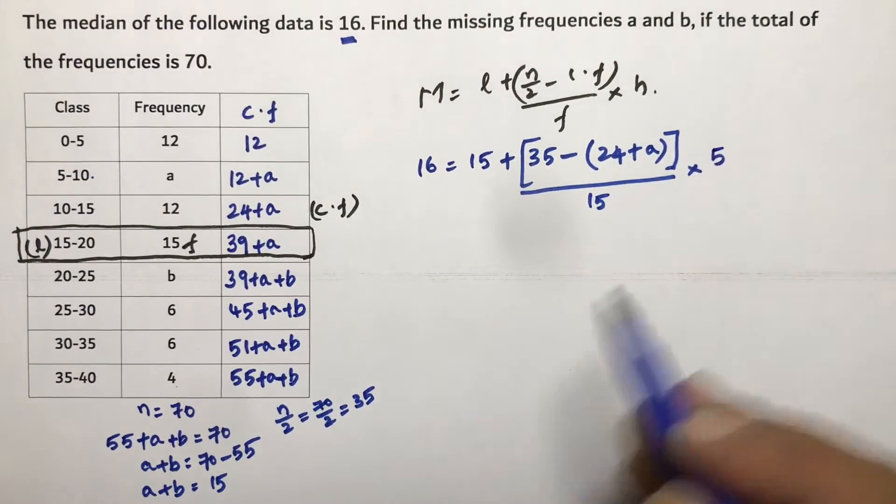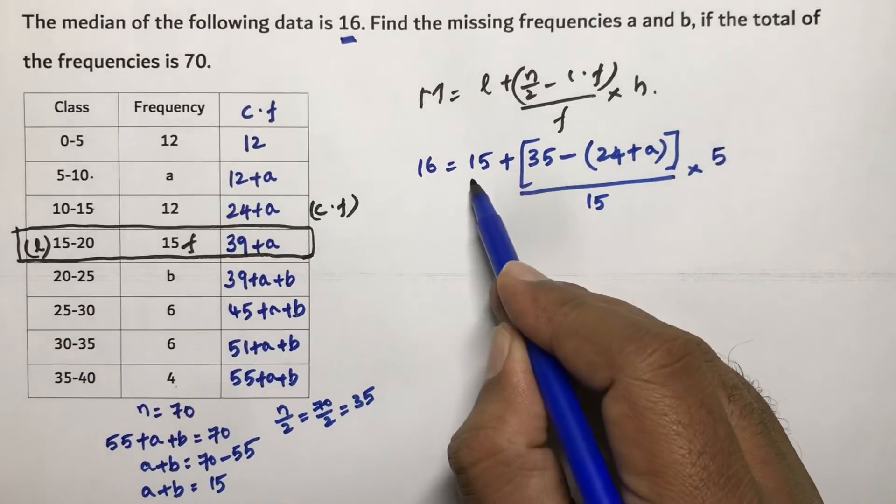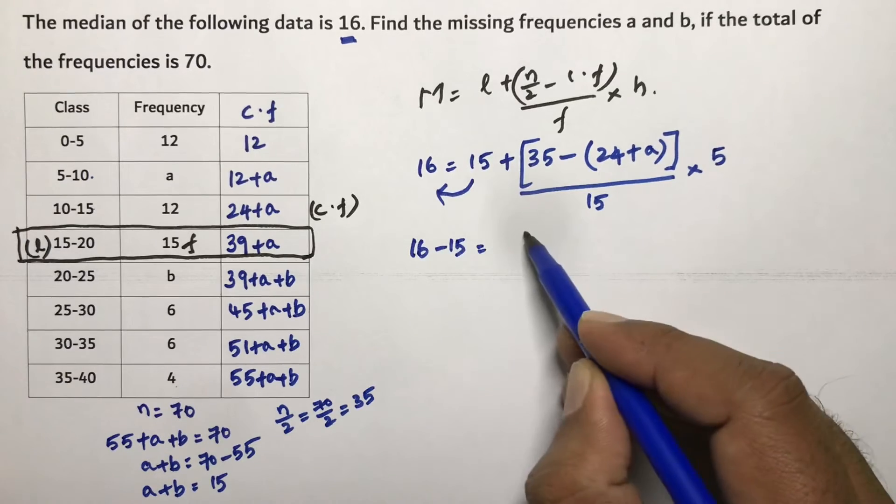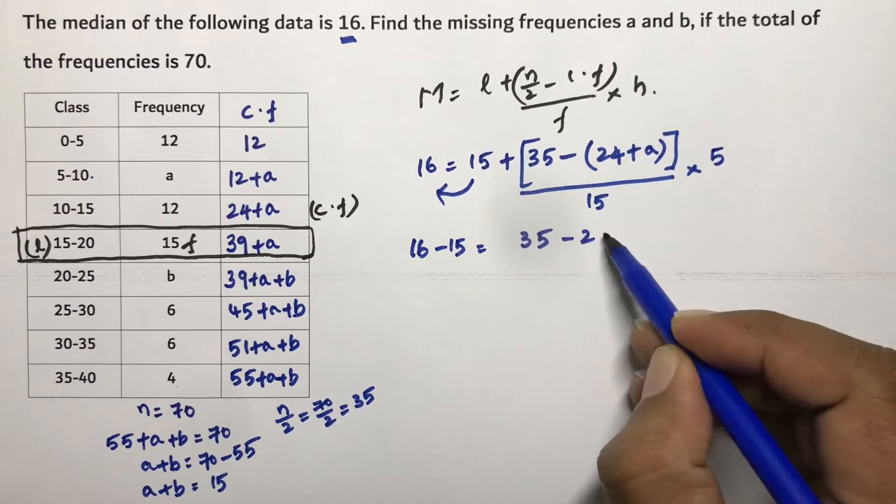Now on transposing, 16 minus 15 is 1. 1 is equal to 35 minus 24 minus a by 3.